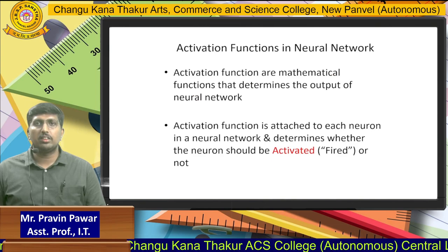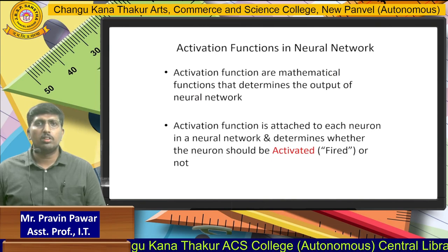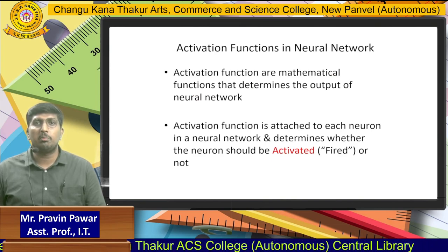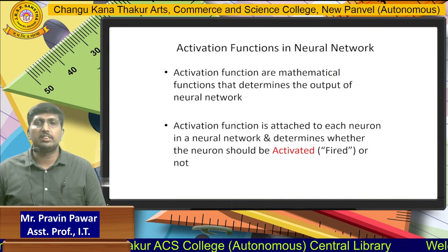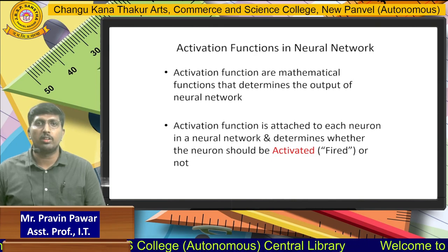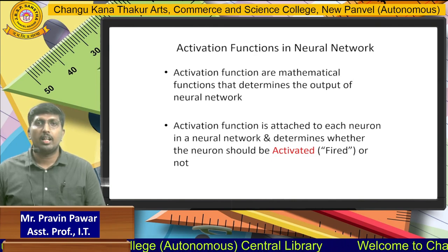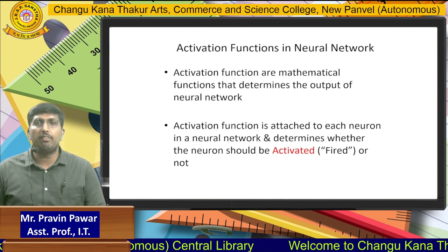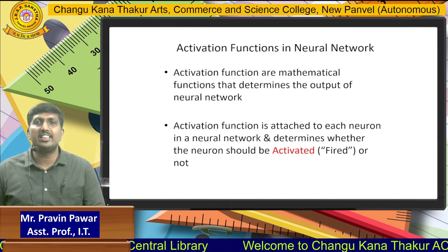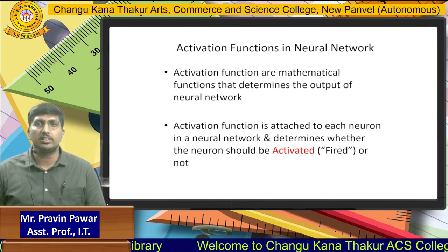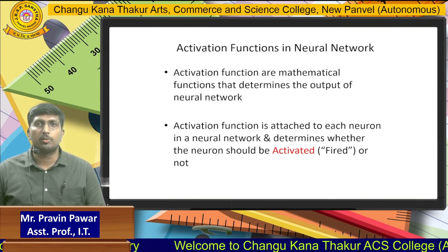The activation function in a neuron is the mathematical function that determines the output of the neural network. The activation function also decides whether the neuron should be fired or not fired — that decision is taken by the activation function. Thank you.